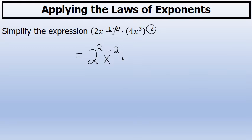In the second factor, 4x to the third raised to the negative 2: the 4 will be raised to the negative second power, and the x to the third will also be raised to the negative second power. Power to a power means the exponents are multiplied, so x cubed to the negative second power is x to the power of 3 times negative 2, or negative 6.